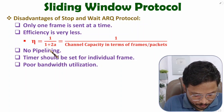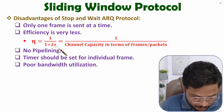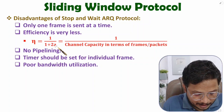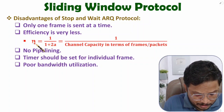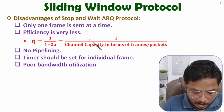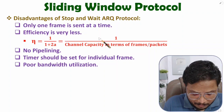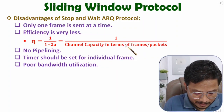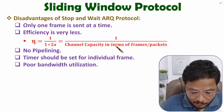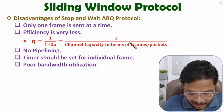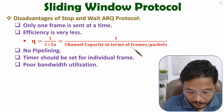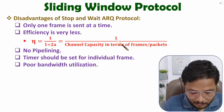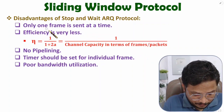We have derived the efficiency formula: efficiency equals one divided by one plus two-a, where 'a' is propagation delay divided by transmission delay. In generalized terms, efficiency is number of frames on the medium divided by channel capacity in terms of frames. With stop-and-wait protocol we can send only one frame on the medium at a time divided by total channel capacity, so efficiency is very less. There is no pipelining with stop-and-wait protocol.